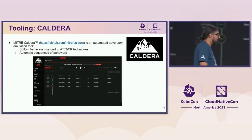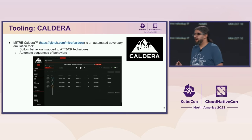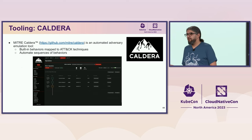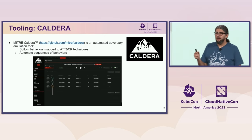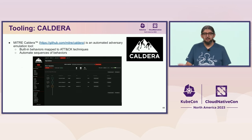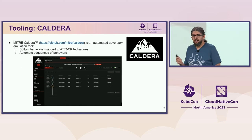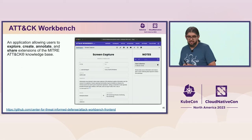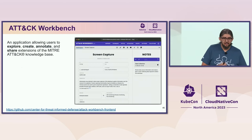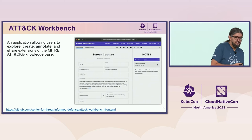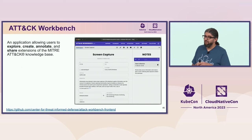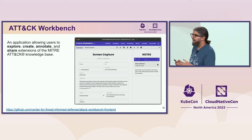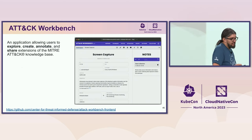Caldera is a complementary tool for Atomic Red Team, offering automation around adversary emulation. It has built-in behaviors mapped to attack emulation scenarios. You can choose one or multiple scenarios and run them in an automated way, gathering logs and spotting what is missing in your system — really useful when you want to start automating adversary emulation. ATT&CK Workbench is another tool — a kind of workbench where you start documenting, exploring, and creating your own knowledge base around what's happening in your environment, with extensions for MITRE ATT&CK that you can customize for your enterprise.